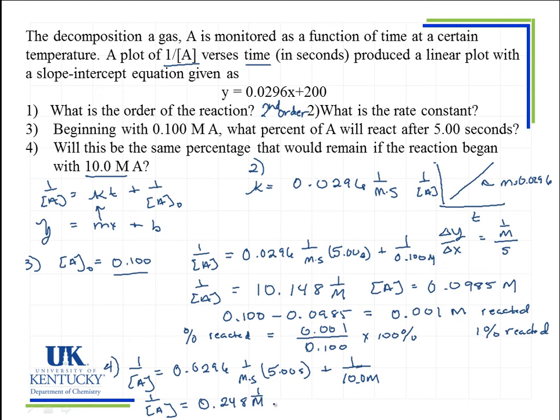And that's 1 over molar. So A would be the reciprocal of that number, and it would be 4.03. So this is how much would remain. So if we're going to calculate the percent that reacted, we need to know first how much reacted. So we started with 10, we ended with 4.03, so that is 6.0 molar that reacted.